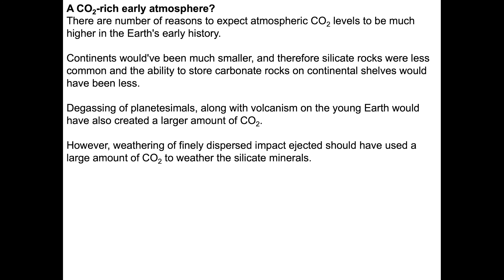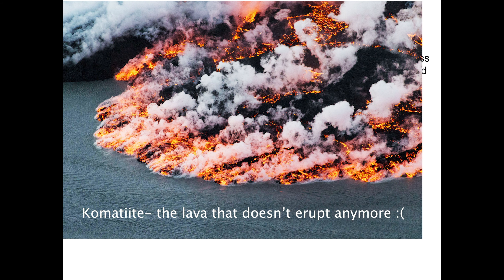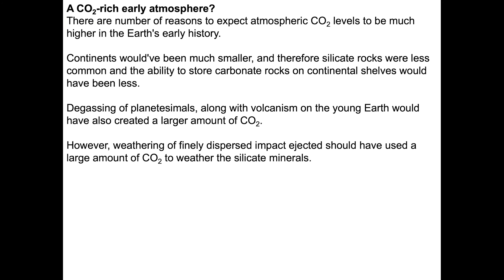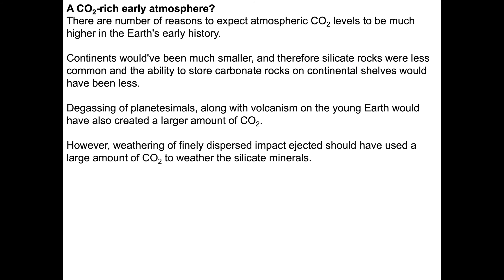Was there an early atmosphere rich in CO2? There are some reasons to suppose this is correct. The continents would have been much smaller — island-sized compared to today — so silicate rocks were less common and the ability to store carbonate rocks on continental shelves was much less. The rocks of this time were called komatiites, erupting commonly from earliest Earth history to about 1.5 billion years ago. They're a very dark, magnesium-rich rock from lava erupting at 1,600 degrees — very susceptible to weathering. The degassing of planetesimals hitting the Earth would also have generated a large amount of CO2 for the atmosphere.